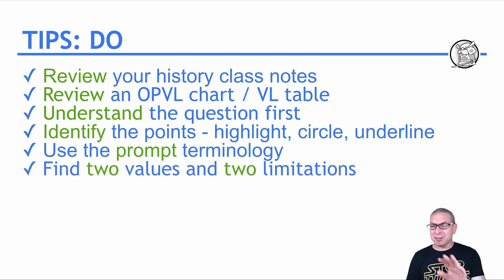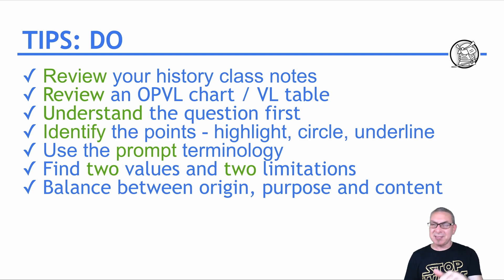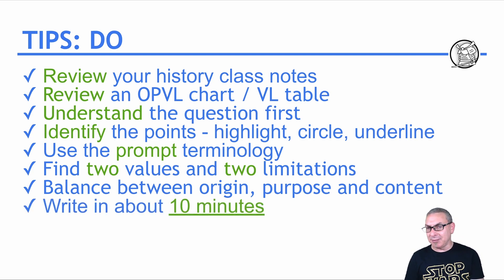Find two values, two limitations. That's my recommendation. But to save time, your teacher might say just three, and have a balance between values and limitations. Talk to your teacher. They'll give you the advice they believe you should have. Have a balance between origin, purpose, and content, and write in about 10 minutes, even faster if you can.